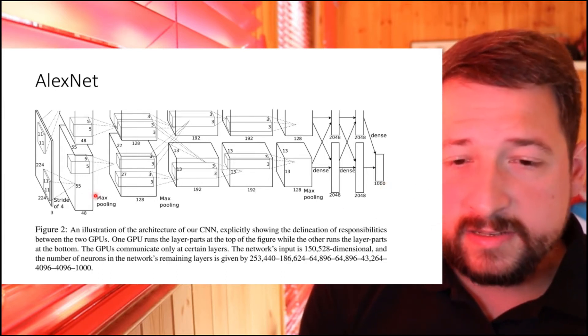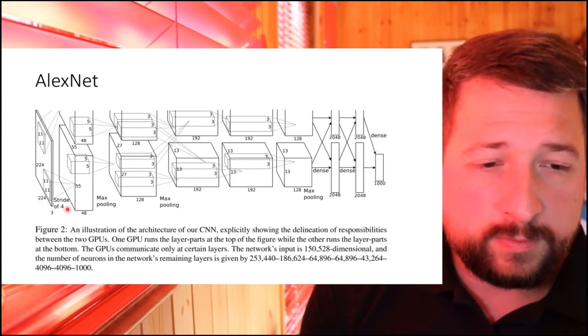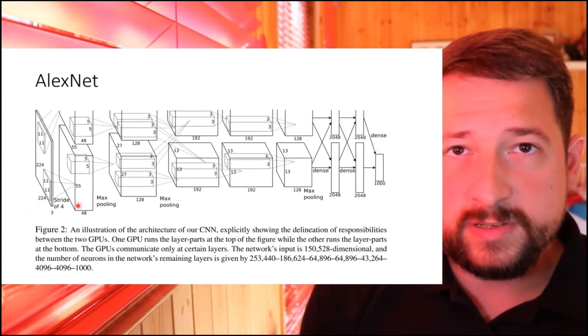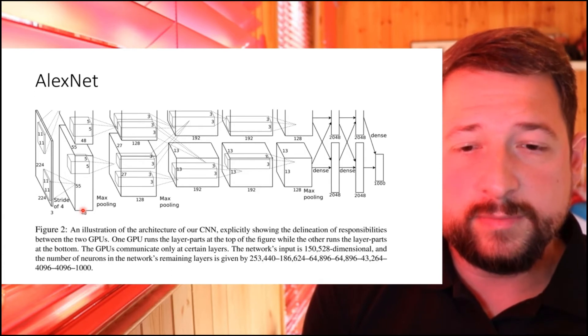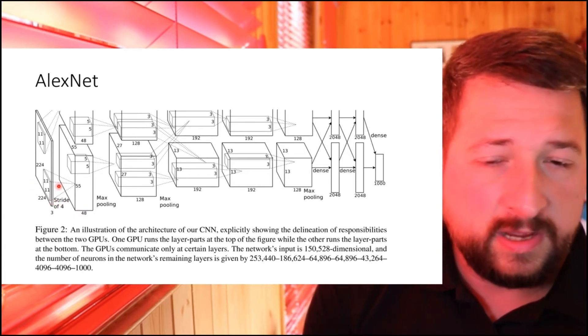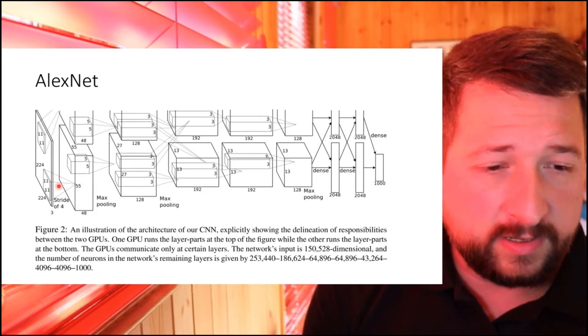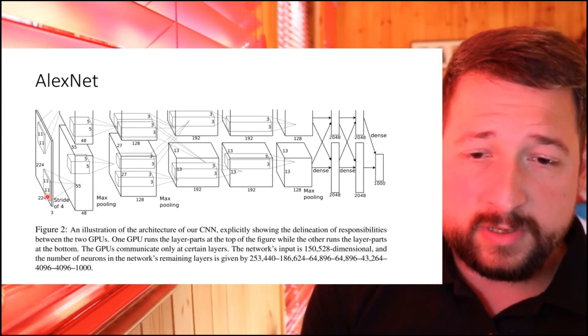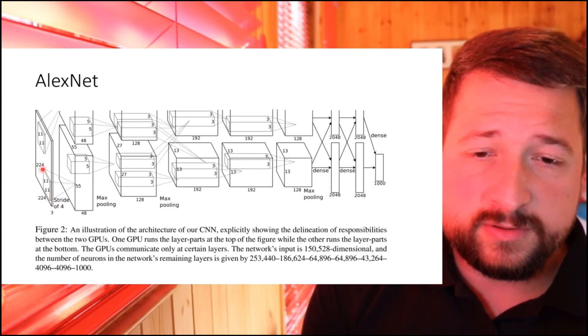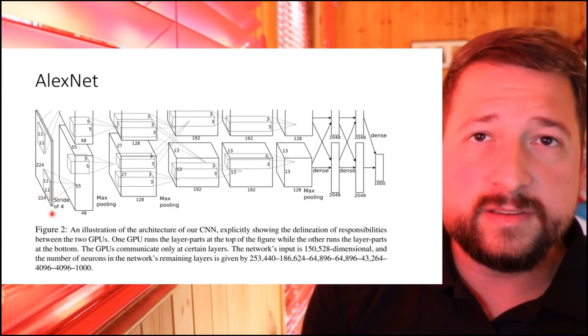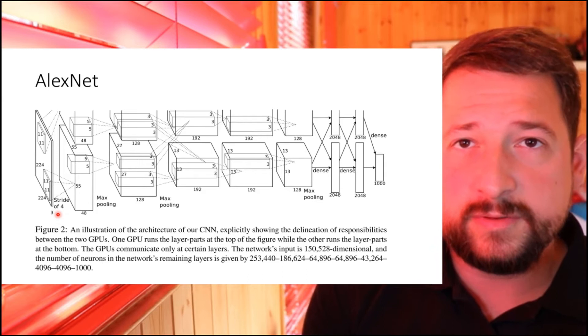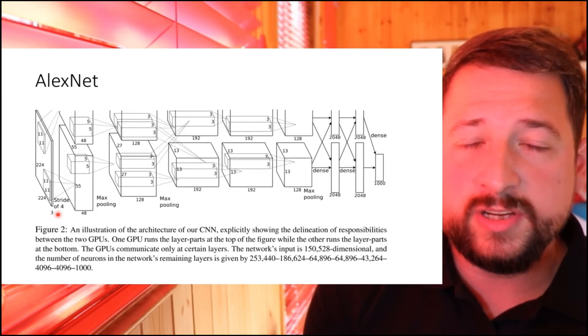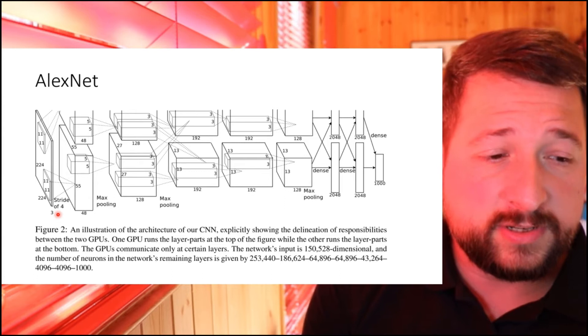AlexNet takes as input these 224 by 224 images, so you can basically rescale your input to this size to make it fit the input tensor for AlexNet. But a considerable difference here is this takes 224 by 224 by 3, and 3 is of course three channels each for R, G, and B, so we are dealing now with color images.